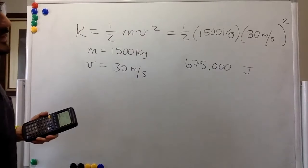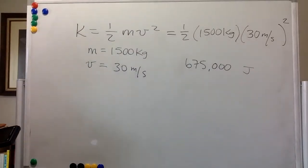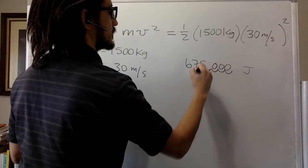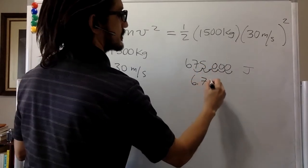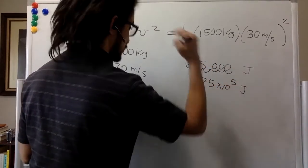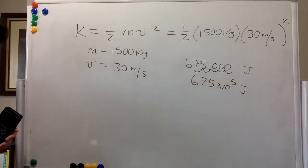So 675,000 joules, which you can also write as 6.75 times 10 to the 5 joules. All right.